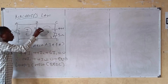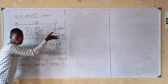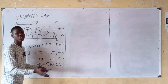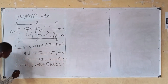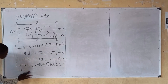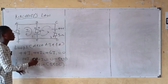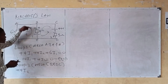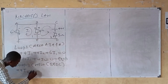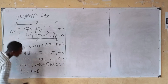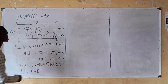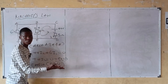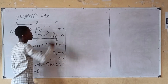The four ohm resistor between B and E is shared. For loop two, going positive to negative gives a voltage gain: positive four I2. That same four ohm resistor in loop one also gives a voltage gain: positive four I1. Not forgetting that I'm considering loop two here. E to D: no resistor.